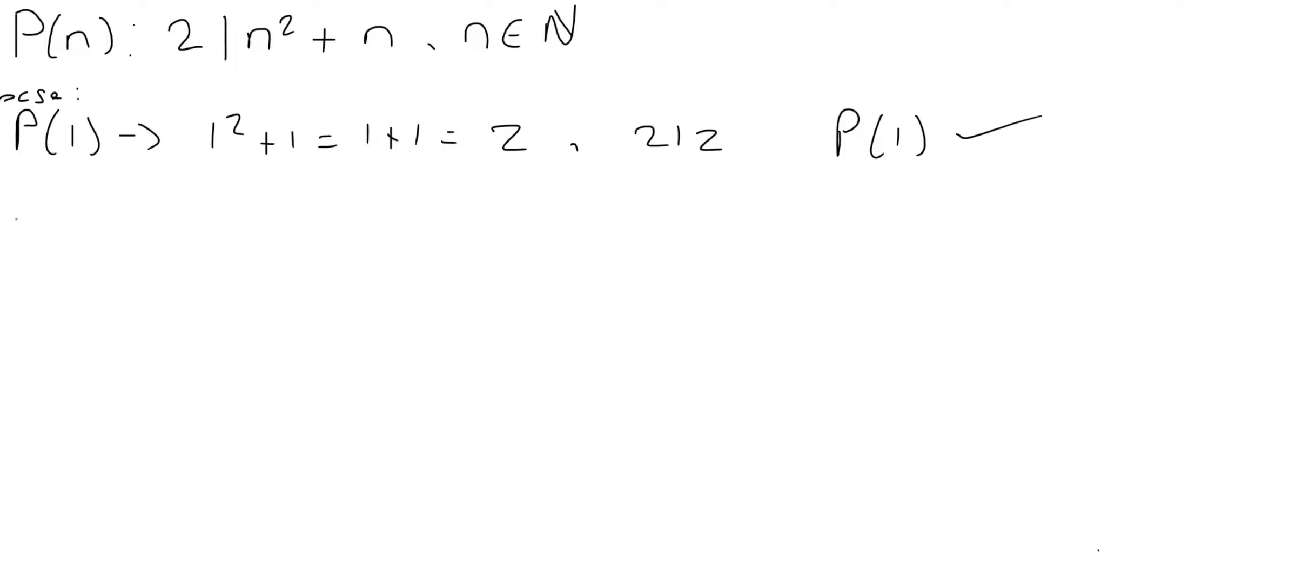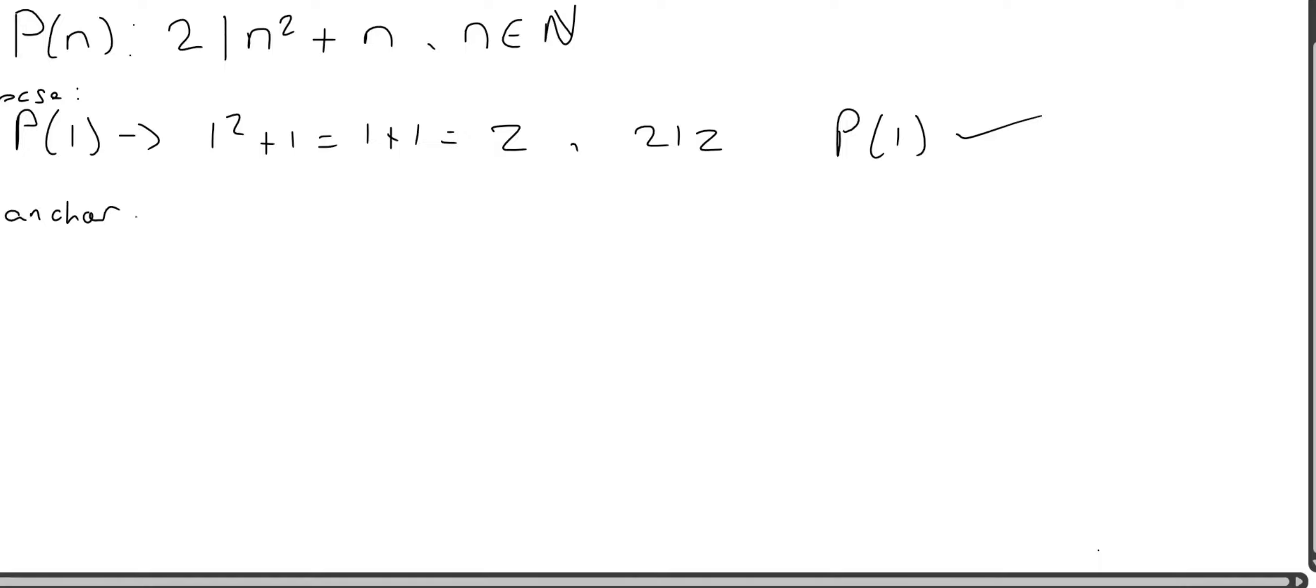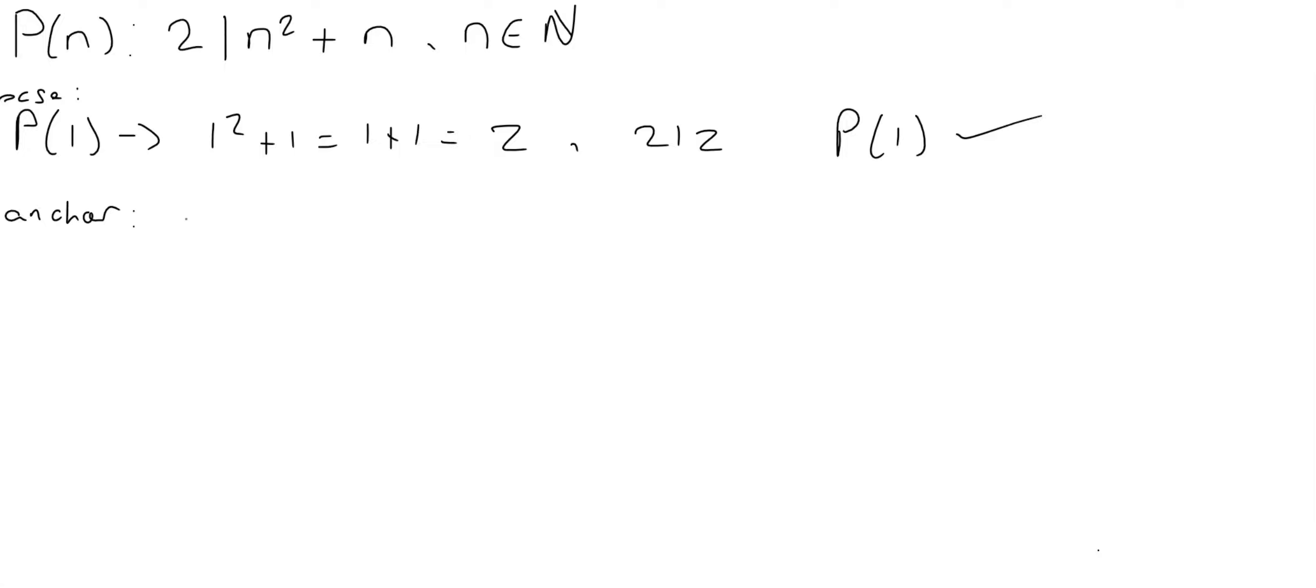Now what we do is something called an anchor step. And for the anchor, we essentially assume for some k in the natural numbers that P(k) holds. So that is, we've assumed that 2 divides k squared plus k for some k. So not necessarily for all natural numbers, but for some natural number, we're assuming that this is true.